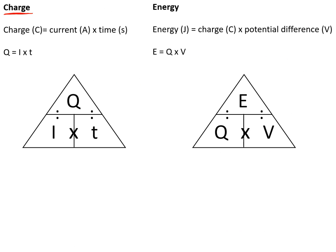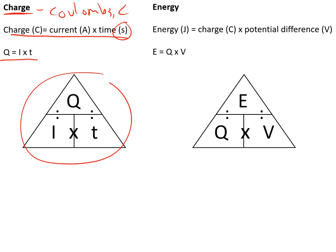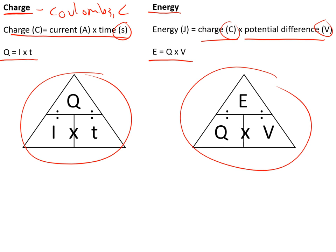Charge is the total amount of electricity that has flowed around the circuit, measured in coulombs (C). To calculate it: charge = current × time — make sure time is in seconds. In symbols: Q = It. The energy transferred by a circuit is calculated as: energy = charge × potential difference, where charge is in coulombs and potential difference in volts — E = QV.